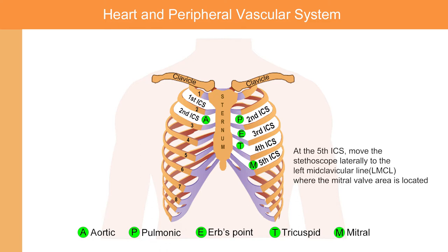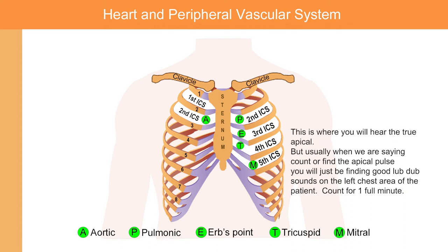At the fifth intercostal space, move the stethoscope laterally to the left midclavicular line where the mitral valve area is located. This is where you will hear the true apical. Usually when finding the apical pulse, you will be finding a good lub-dub sound on the left chest area of the patient and counting that for a full one minute.